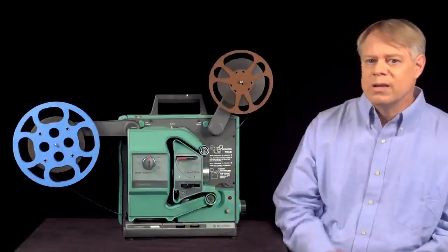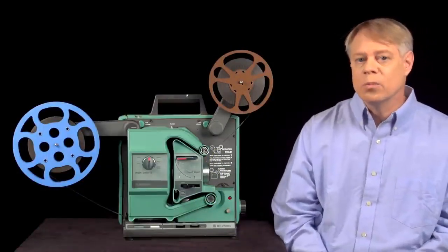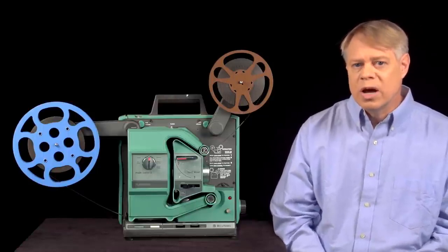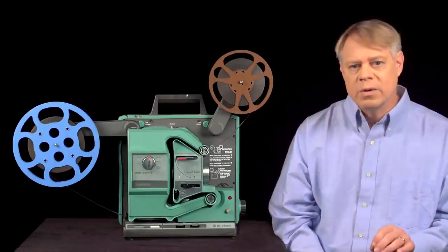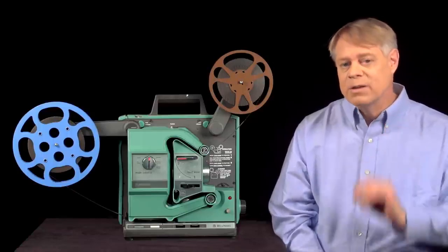A subtle but important detail of film projectors is the film loop. The loop allows for two kinds of motion of the film, intermittent and continuous. The key is they happen simultaneously.